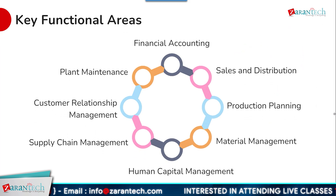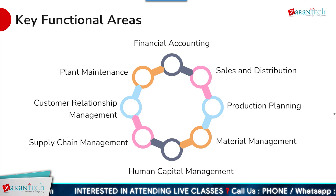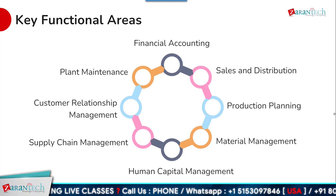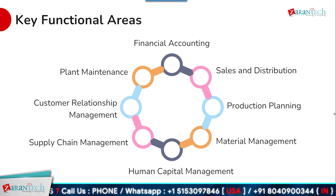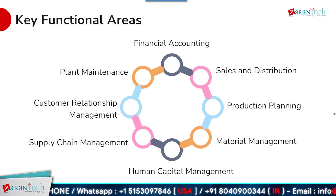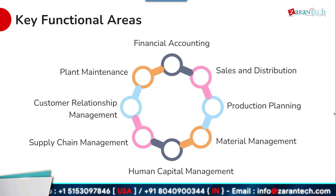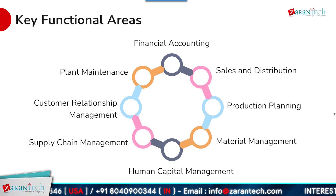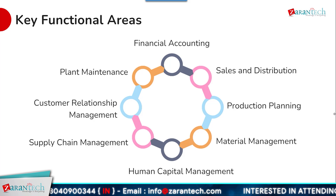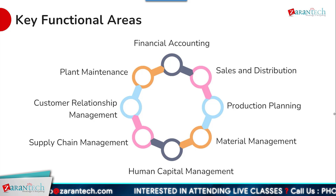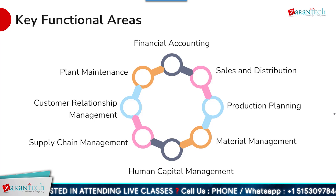SAP S/4HANA Public Cloud supports end-to-end processes across key functional areas. In sales and distribution, it provides order management, pricing, and billing. For production planning, it enables demand forecasting, material requirements planning, and detailed scheduling. Material management covers procurement, inventory management, and warehouse operations. The solution also supports plant maintenance, CRM capabilities including sales force automation and marketing, supply chain management, human capital management with time tracking and payroll, and financial accounting including general ledger and accounts payable and receivable.